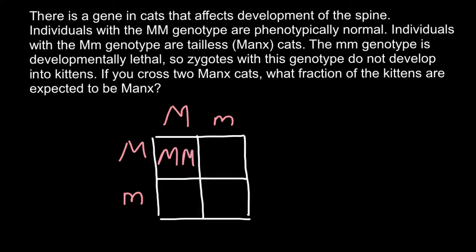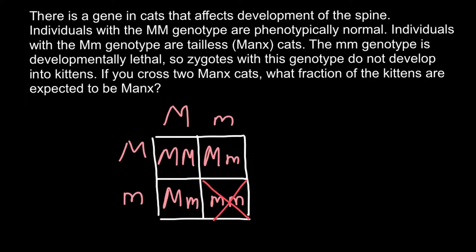The four genotypes are: MM, Mm, Mm, and mm. We are told that the homozygous recessive genotype is lethal, so we cross out that genotype. Now we have to find the probability that the progeny would also be Manx — that is, heterozygous, just like the parents.